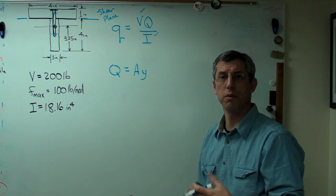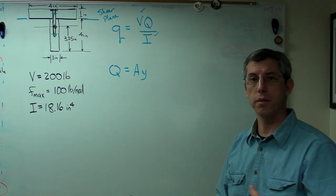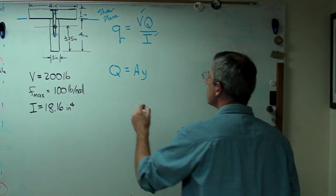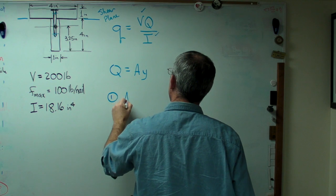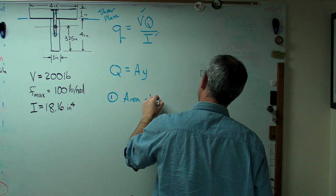If there was more than one box, if this beam had a more complex shape, you'd just be adding up more terms here. The method is the same. So let's start by using the area above the shear plane.